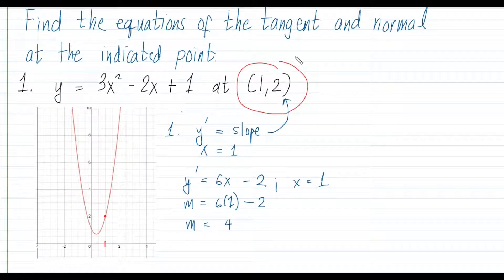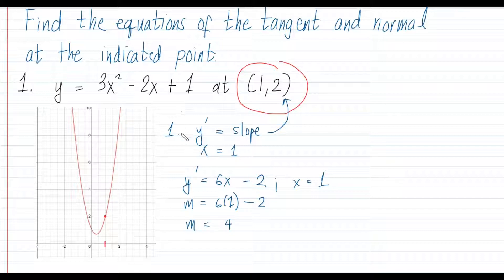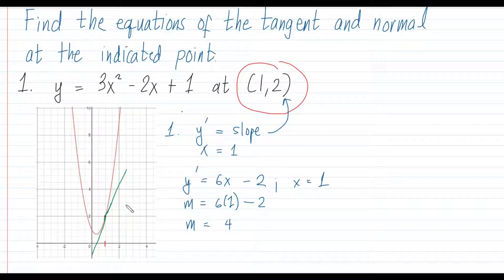What is the equation of the tangent? Remember, the tangent line is a line that intersects our curve — in this case the parabola — at only one point. This means the slope of the tangent line is also the slope at the indicated point.